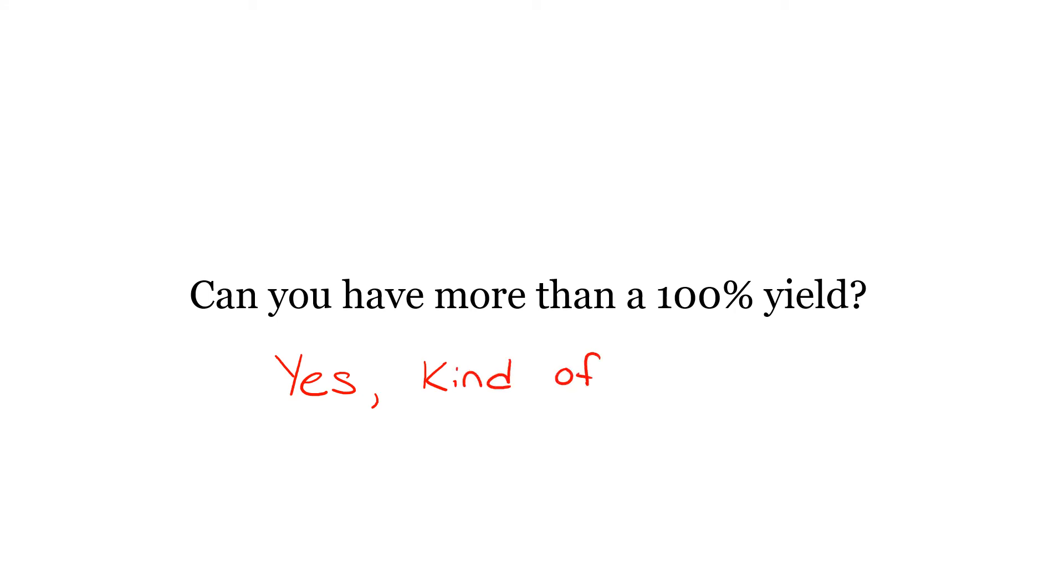So if I were doing a reaction and I ended up with more product than I was expecting, there can be a number of different things going on. So I could be massing a damp product. This happens often. So if you were supposed to completely dry it out and it was still containing moisture, that moisture would add mass to the product.